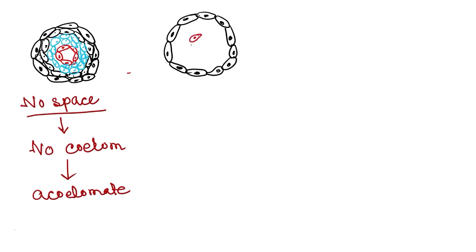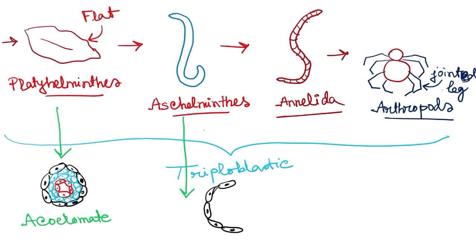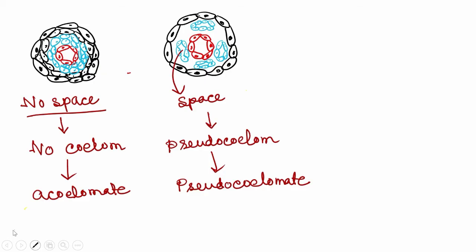Another type of mesodermal distribution is where a mesodermal layer is present and a body cavity exists inside, but this cavity is surrounded by mesodermal cellular layers that are scattered and not continuous. This body cavity is called a pseudocoelom, and these animals are called pseudocoelomates. This pseudocoelomate germ layer distribution is found in Aschelminthes, where there is a body cavity surrounded by scattered mesodermal cell layers.